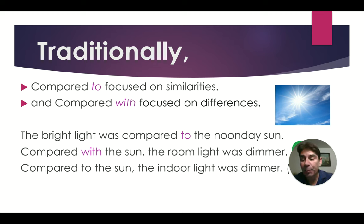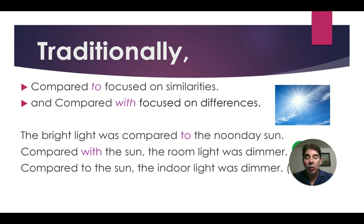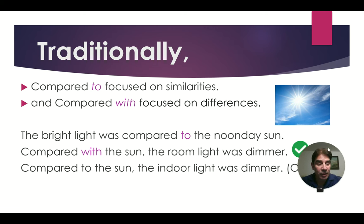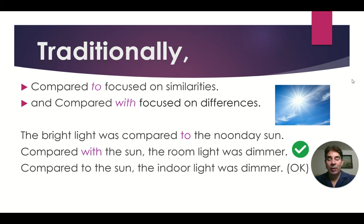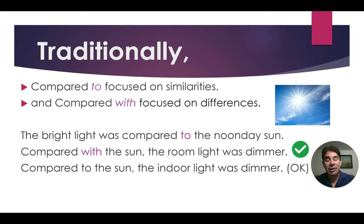For example: 'The bright light was compared to the noonday sun' — this means the bright light was similar to the noonday sun. 'Compared with the sun, the room light was dimmer' — we're showing a contrast here. Nowadays, a lot of people will say 'Compared to the sun, the indoor light was dimmer,' and that's considered acceptable in today's English.